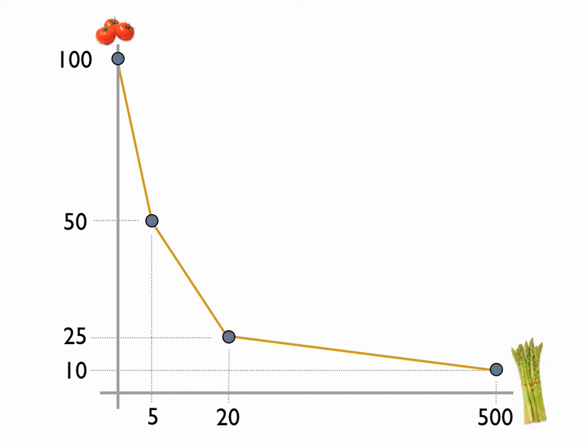Again, this represents how people will trade two items — in this case, tomatoes and asparagus.